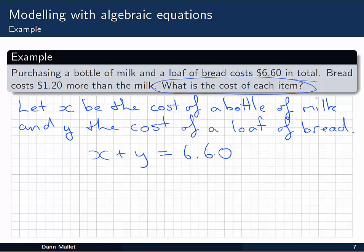The next thing I'm told is that bread costs $1.20 more than milk. Now you need to be careful with this one. Bread is the thing that costs more. So milk plus $1.20 equals the cost of bread. So I can say that y is equal to the cost of milk plus $1.20.